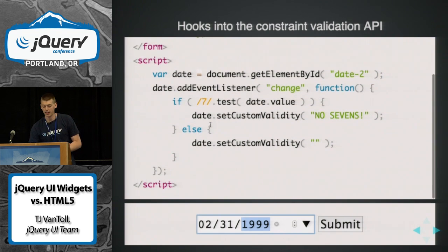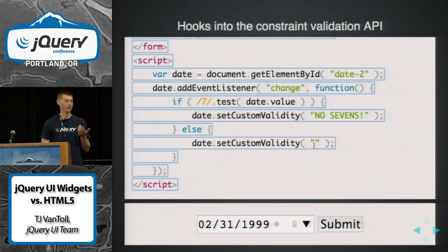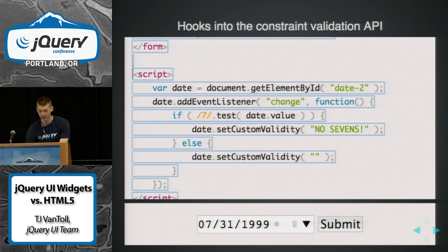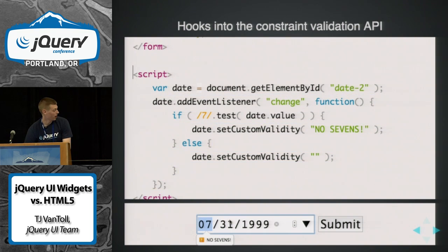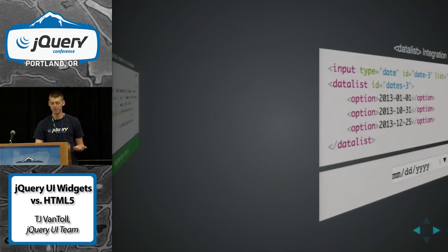You also get the full constraint validation API. The setCustomValidity method — if you call it with an empty string, that means the field is valid. If you call it with a non-empty string, it'll set it as the error message. I just don't like sevens, so I can do this custom thing and prevent sevens. And if I give it a valid value, the browser will just let me submit it. All that's just kind of baked in.